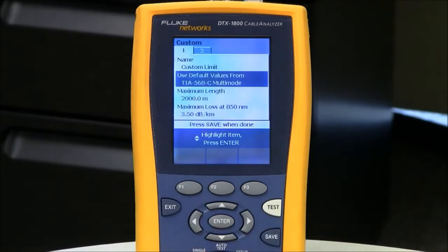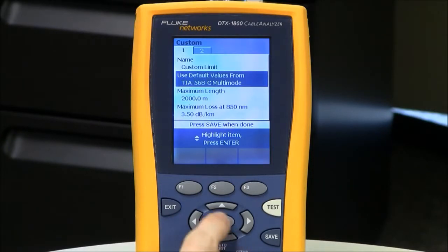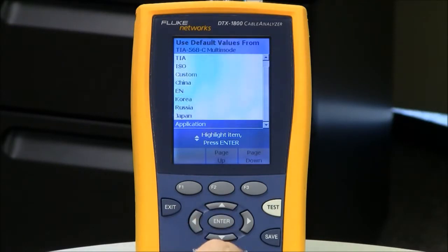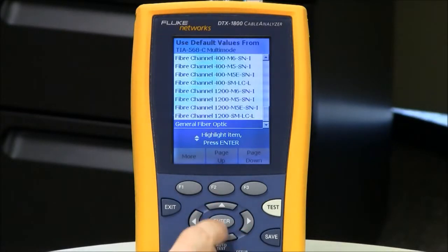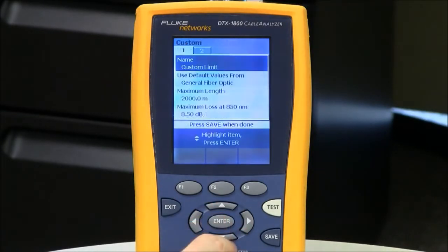Then Use Default Values From. I need to change this to General Fiber Optic. So I hit Enter, and then General Fiber Optic is found under the Applications folder, which is at the bottom of the list. So a cheat here is, if I press the up arrow key, it jumps to the bottom, where I'll see Application. Now I hit Enter, and General Fiber Optic is again at the bottom of the list. So I'll press the up arrow key, and I'll see General Fiber.